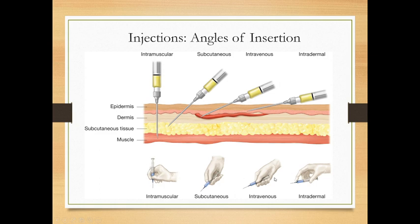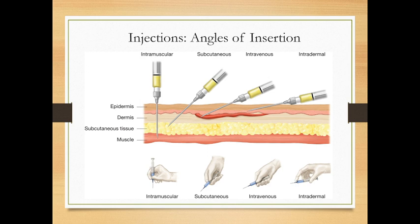It's important to pay attention to how you hold the syringe. For intramuscular, the plunger is outside the hand — like holding a pen to write. For every other injection, the plunger is inside the palm. Practice with a pen or pencil: intramuscular is like writing; for subcutaneous, slide the end into your palm. The angle changes based on tissue depth: 90 degrees for intramuscular, 45–60 degrees for subcutaneous, and 20–30 degrees for intravenous.